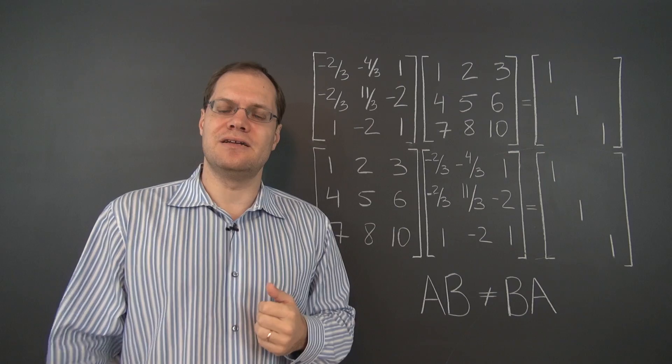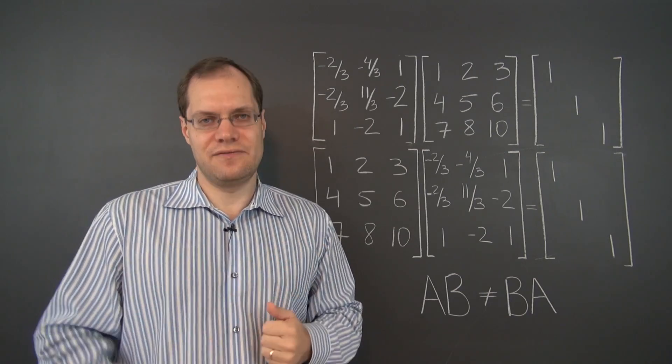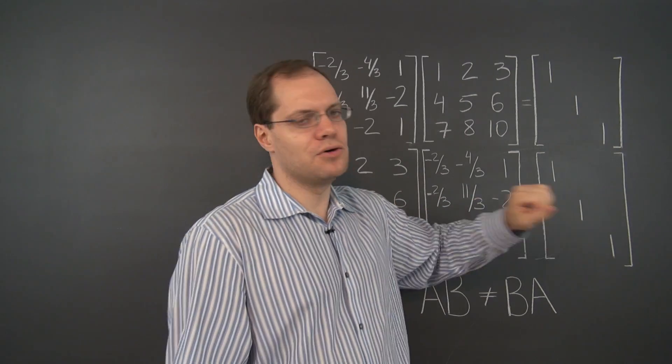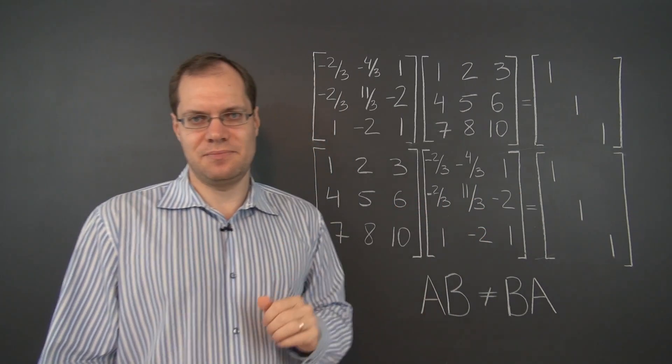Every matrix that has an inverse has a well-defined inverse, and whether you multiply by it on the left or on the right, the result in both cases is the identity matrix.